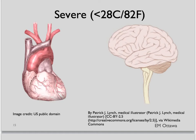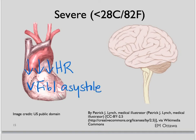Severe hypothermia occurs under 28 degrees Celsius. The heart rate is even slower. The patient might have ventricular fibrillation or even asystole. Neurologically, the patient would be completely unresponsive.